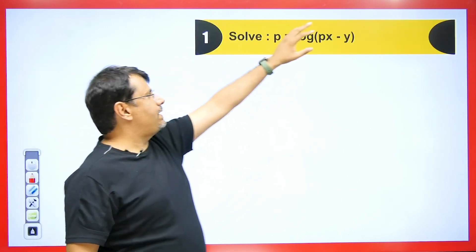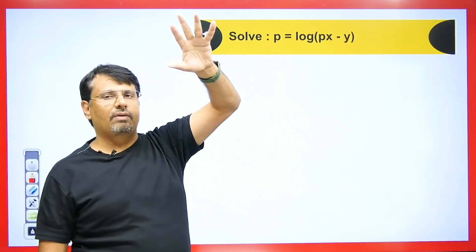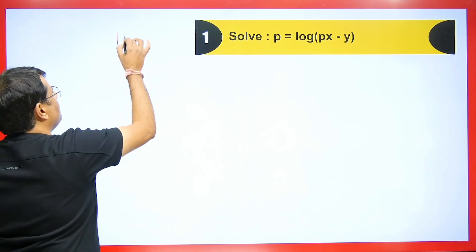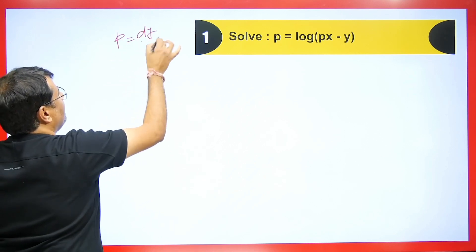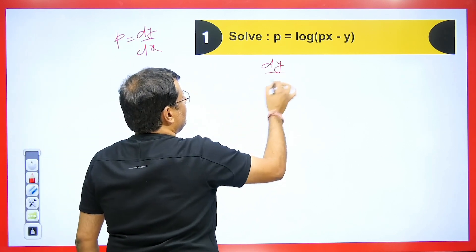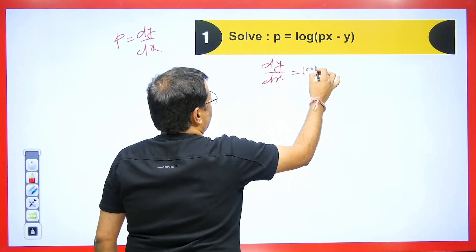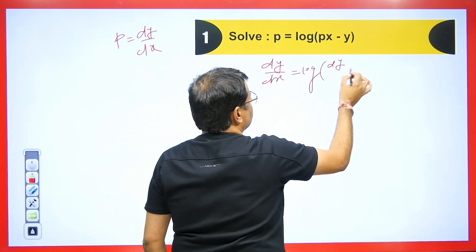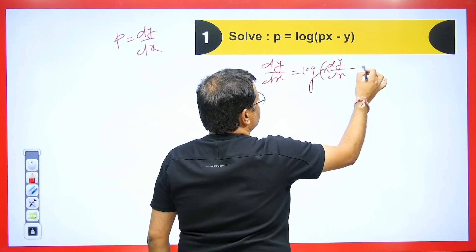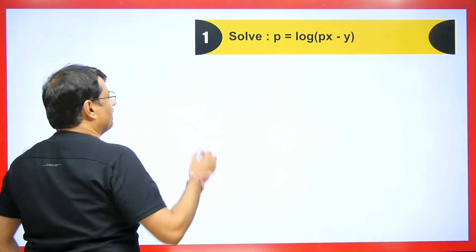For now let's solve this form directly. We will remove the log, so this becomes e^p = px - y. Rearranging so that it is in the form y = ..., we take y to one side and the other terms to the other side, giving y = px - e^p.